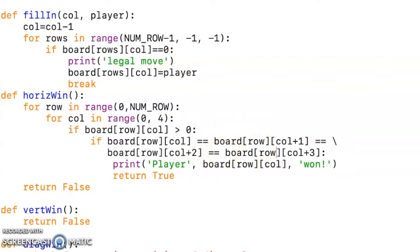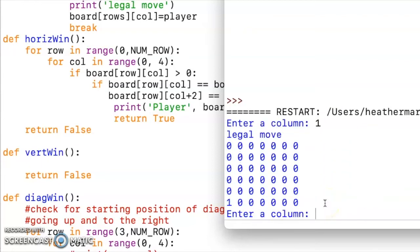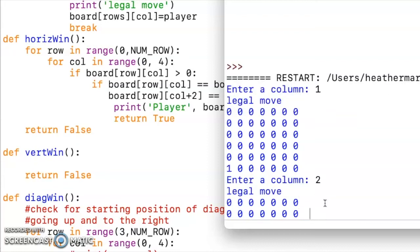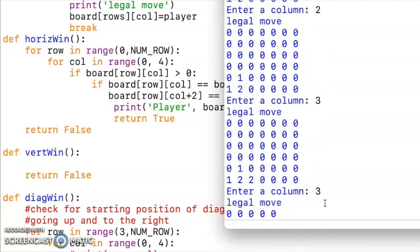So let's test that out. I'll go ahead and run the program, trying out the horizontal win condition. I'm going to have player one start in position one. And then player two is just going to always, oh, that's not what I meant to do. I'm going to have player one go in position two, player two, maybe position three. So I'm going to let player two go for the win here.